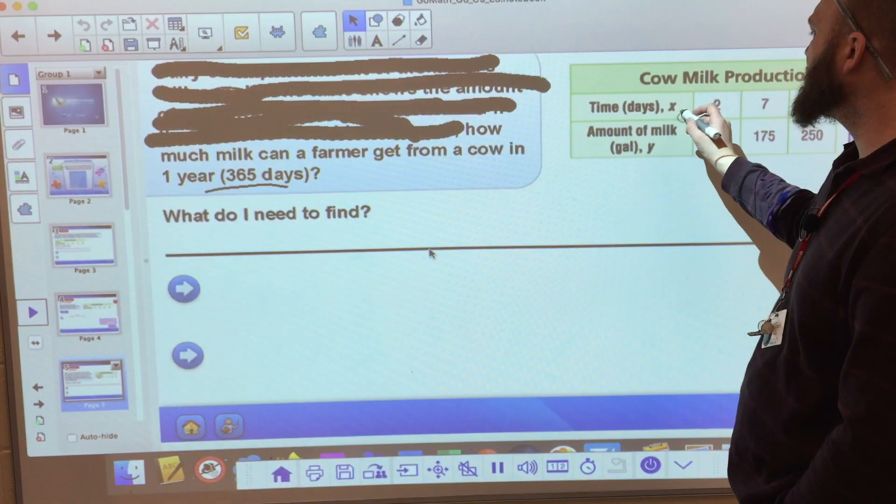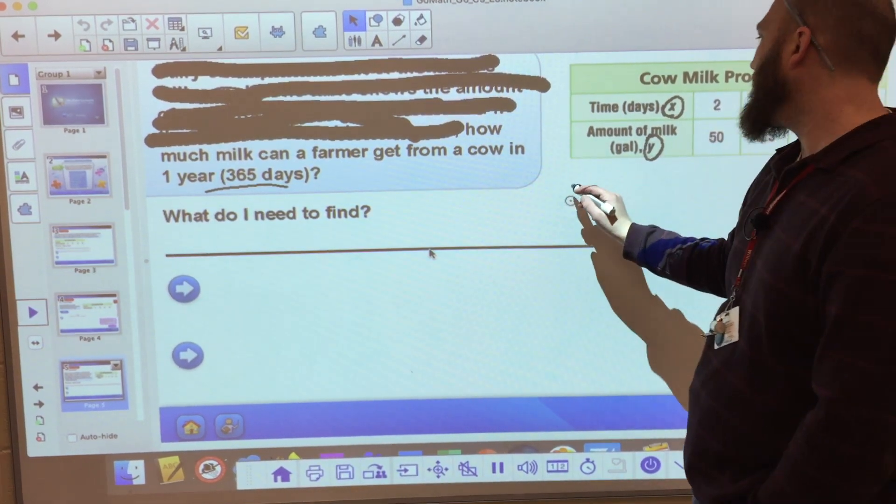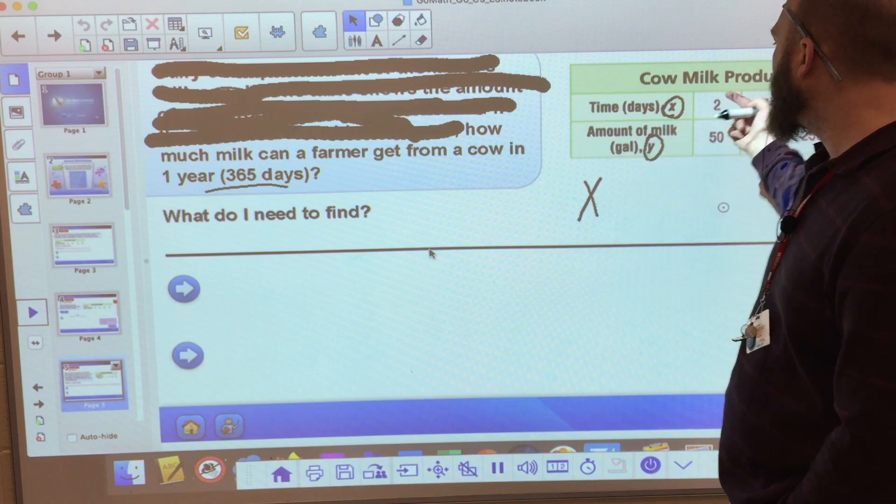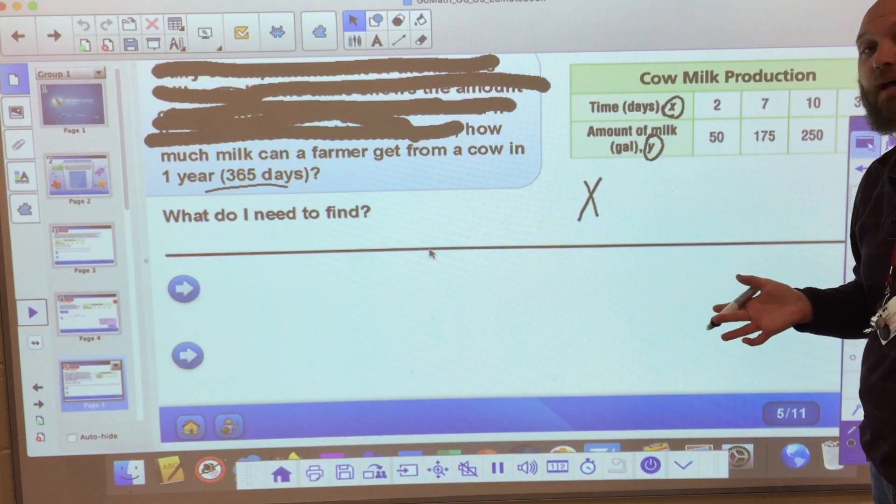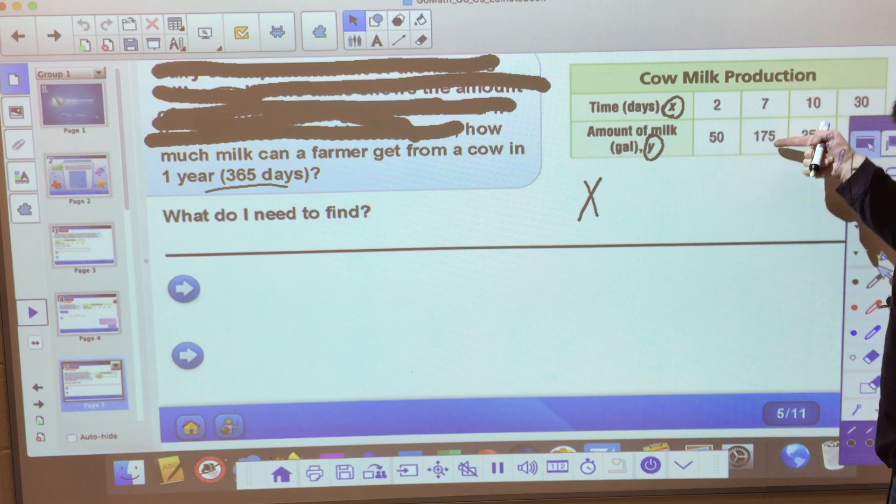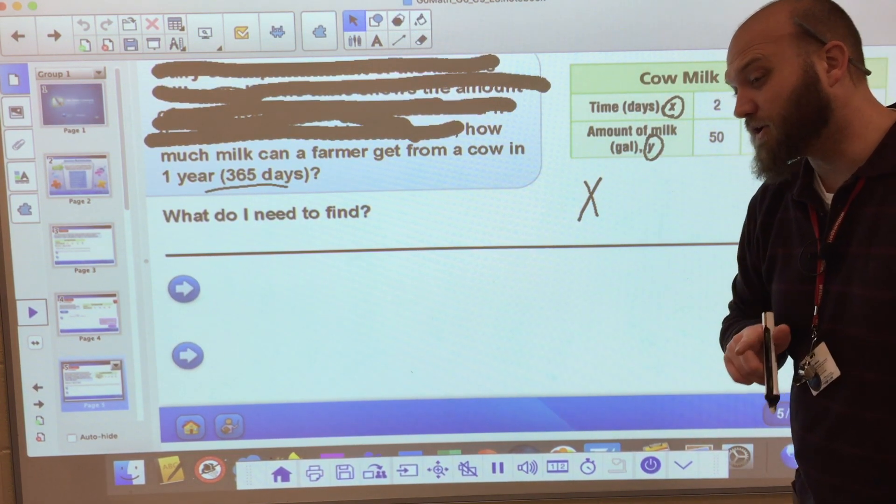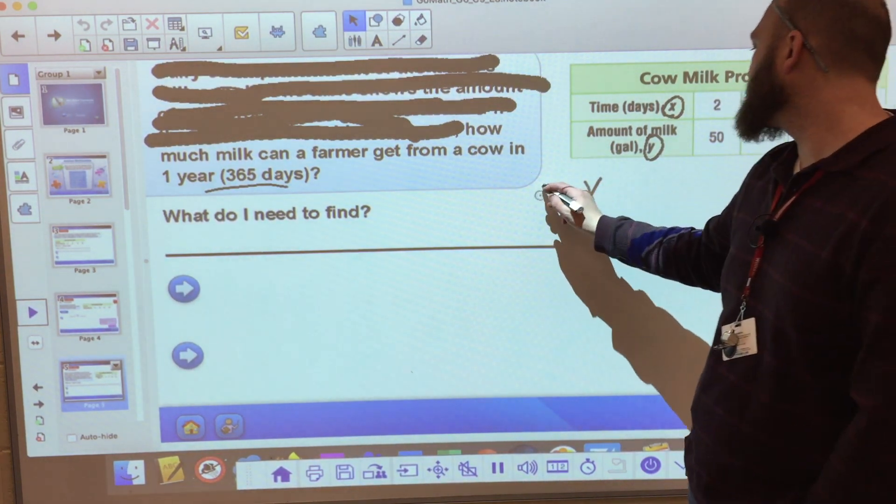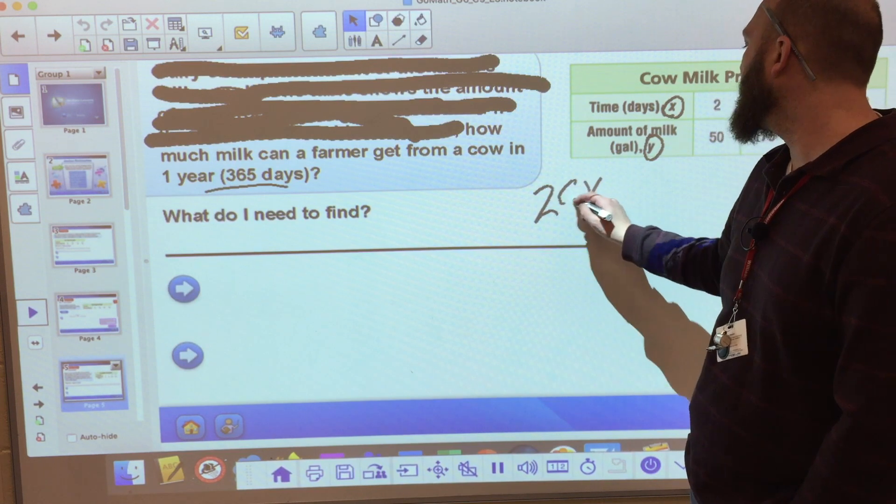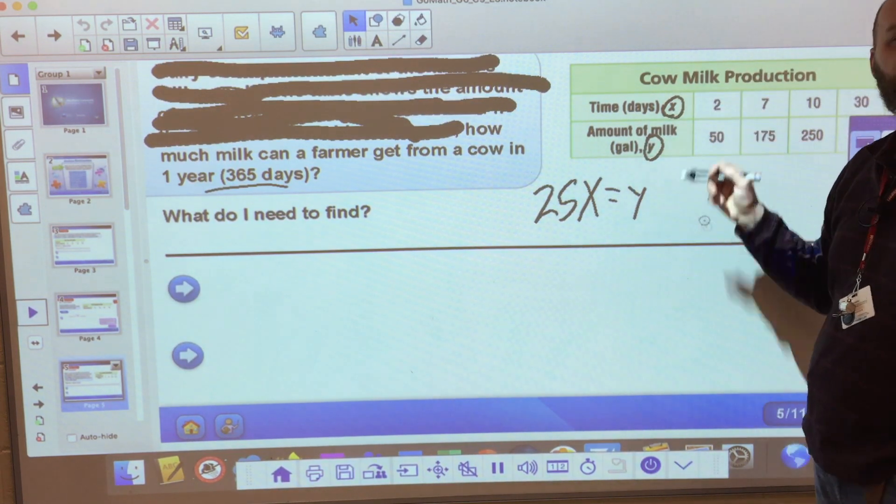How do I go from 2 to 50? Well, I can add 48, or I can multiply by 25. How do I go from 7 to 175? Well, I can multiply by 25, but I can't add 48. So I know that I am multiplying by 25. So whatever 25x is equals y. Now I have my relationship here.